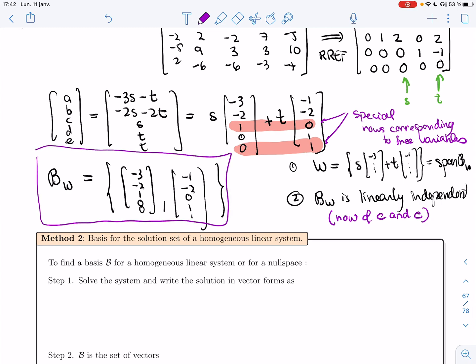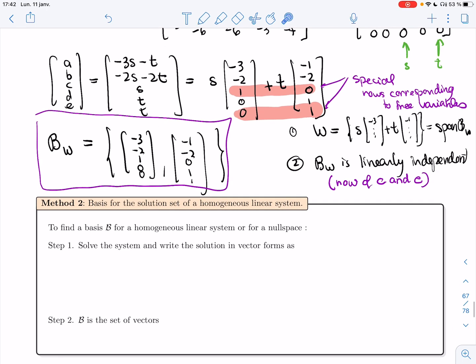So in some sense, if your set of generators come from a linear system, for free, you know that they're linearly independent. So you save the step of checking that they're linearly independent.